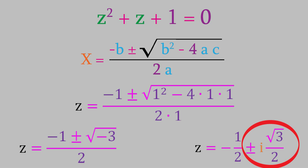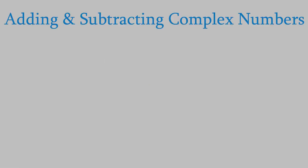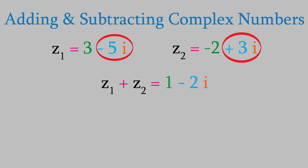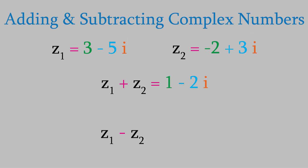It'll be helpful to understand how to do basic math with complex numbers — adding, subtracting, multiplying, and dividing. Adding and subtracting is really easy. For example, with 3 − 5i and −2 + 3i: to add them, we add the two real parts and separately add the two imaginary parts, giving us 1 − 2i. Similarly, subtracting the two numbers gives us 5 − 8i.